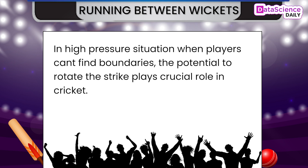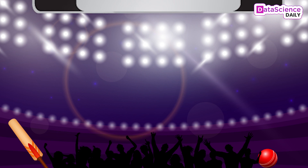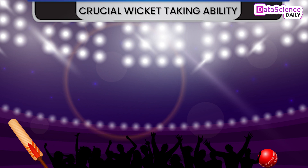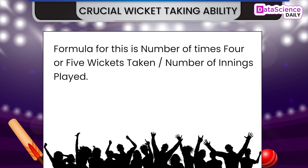Some of the bowling metrics used for analysis are: Wicket Taking Capacity — calculated by dividing the number of balls bowled by the wickets taken by the player. It is a pivotal metric as it indicates the capacity of the player to slow down the run rate and put stress on the upcoming batsman. Crucial Wicket Taking Ability — the formula for this is: number of times four or five wickets taken divided by number of innings played.